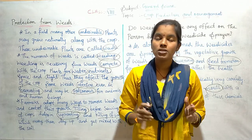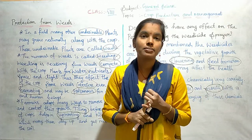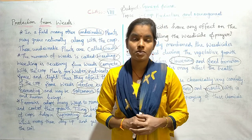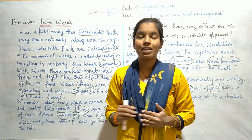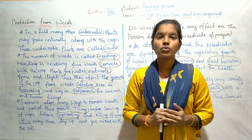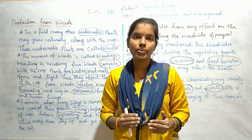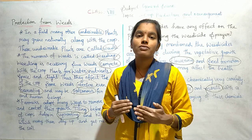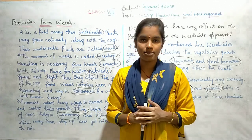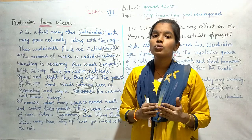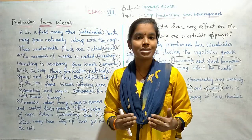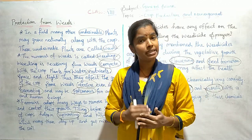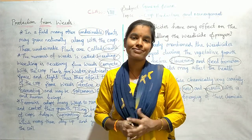Children, today we have discussed about protection from weeds. Weeds are unwanted plants which grow along with the crops and affect their growth. The removal of weeds is called weeding. Weeds establish superiority over crop plants, and farmers must adopt methods to remove them, including the use of weedicides. In the next class we will discuss about harvesting. Bye bye, children!